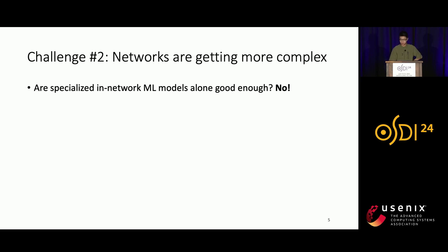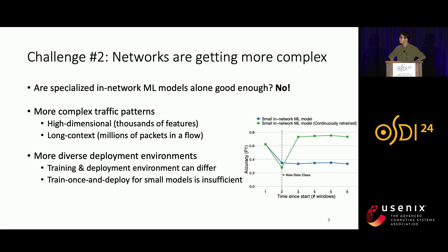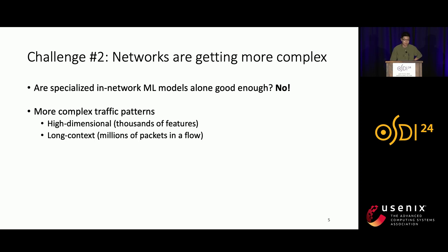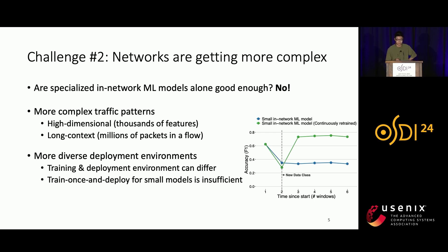But is this good enough? We find that small models alone are not sufficient. Network and traffic patterns are getting much more complicated — many packets can have thousands of features as inputs, and millions of packets can exist in a single network flow. Moreover, deployment environments are getting much more diverse in production networks, meaning the small model will see data patterns that did not appear in training. Through empirical experiments, we can see that small models are especially vulnerable to unseen data classes, as shown by the blue line in the plot, unless they are continuously retrained after deployment, like the green line shows.